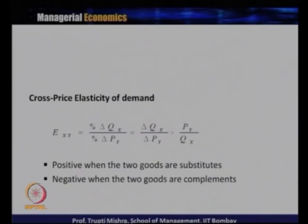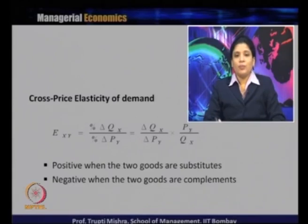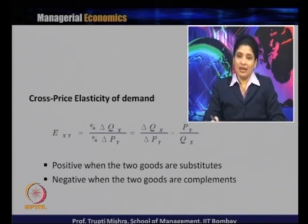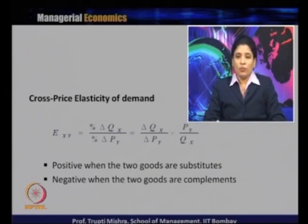Cross price elasticity of demand measures the responsiveness of the quantity demanded of good X to a change in the price of related good Y, holding the price of good X and all other demand determinants for X constant. If there are two products X and Y, cross price elasticity measures the change in quantity demanded of X when the price of Y changes, keeping price of X and all other factors constant. The formula is: ΔQx/ΔPy × Py/Qx. Here Qx is the quantity of X, Py is the price of Y, ΔPy is the change in price of Y, and ΔQx is the change in quantity demanded of X.